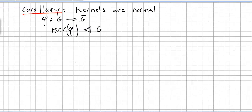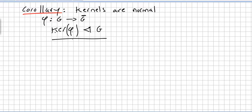Now we consider the converse of this statement. The corollary says that the kernel of every homomorphism of a group is a normal subgroup. We are now going to check — and I'll call this a theorem — that normal subgroups are kernels.